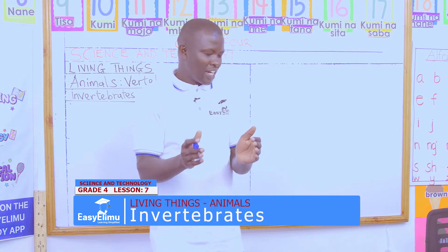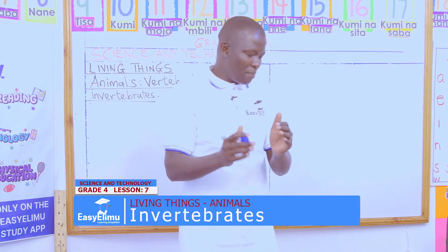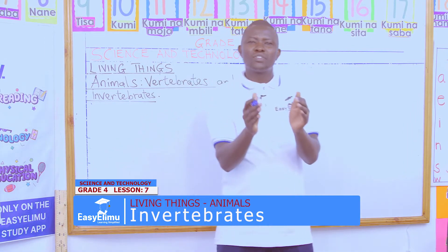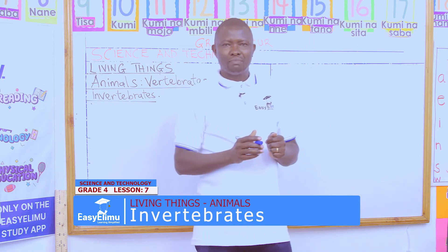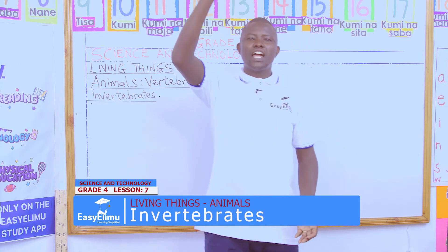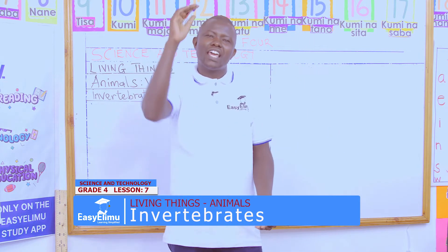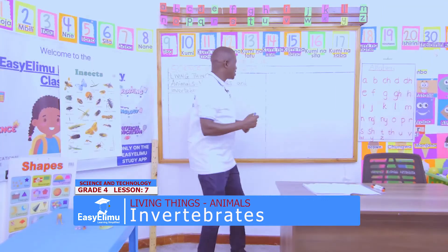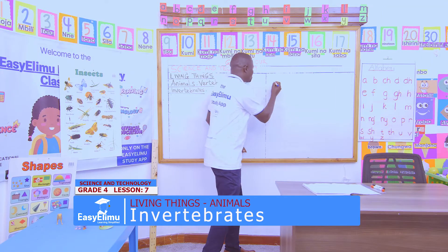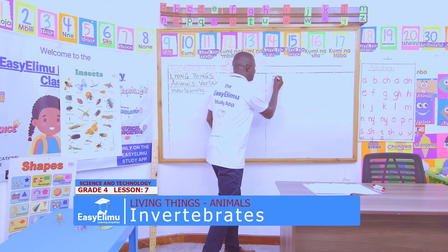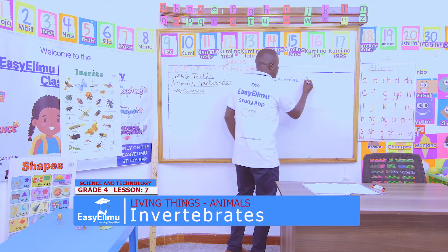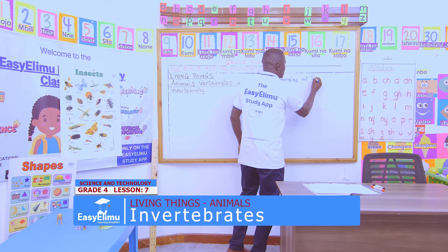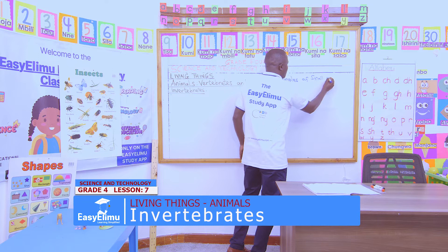Now, in pairs, I want you to discuss: can you give me examples of small animals? Because we said yesterday there are big animals — that means there are also small animals. Can you give me examples of small animals?